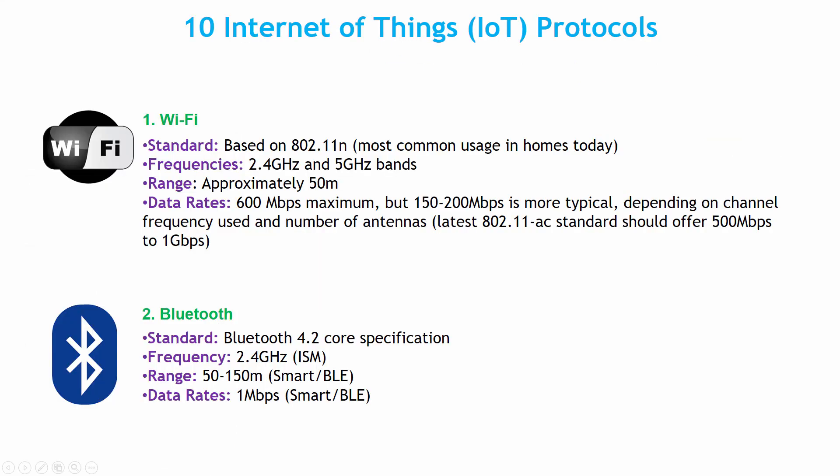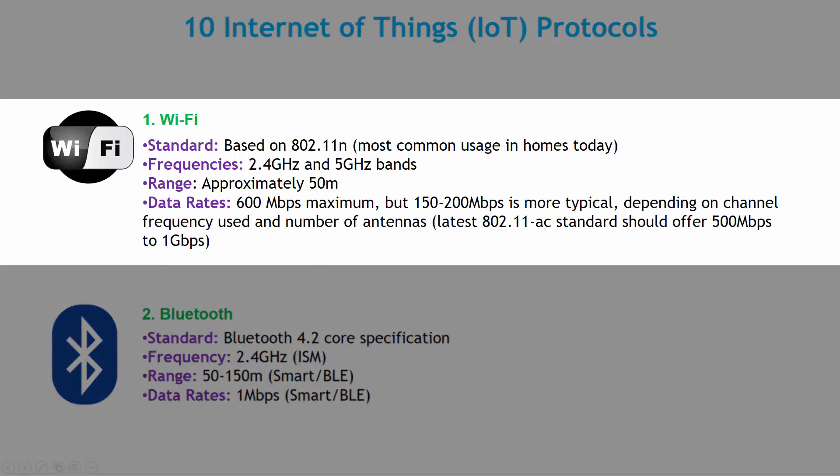The very first one, which is obvious to us, is Wi-Fi. Currently the most common Wi-Fi standard used in homes and many businesses is IEEE 802.11n, which offers a throughput in the range of hundreds of megabits per second to gigabit per second — which is fine for file transfers but may be too power-consuming for many IoT applications. It is not recommended to always use high power consuming Wi-Fi devices.